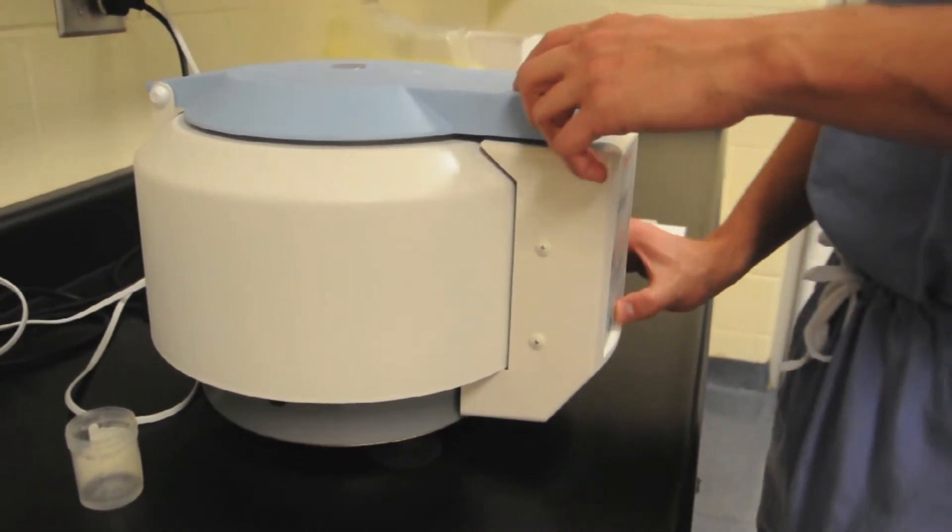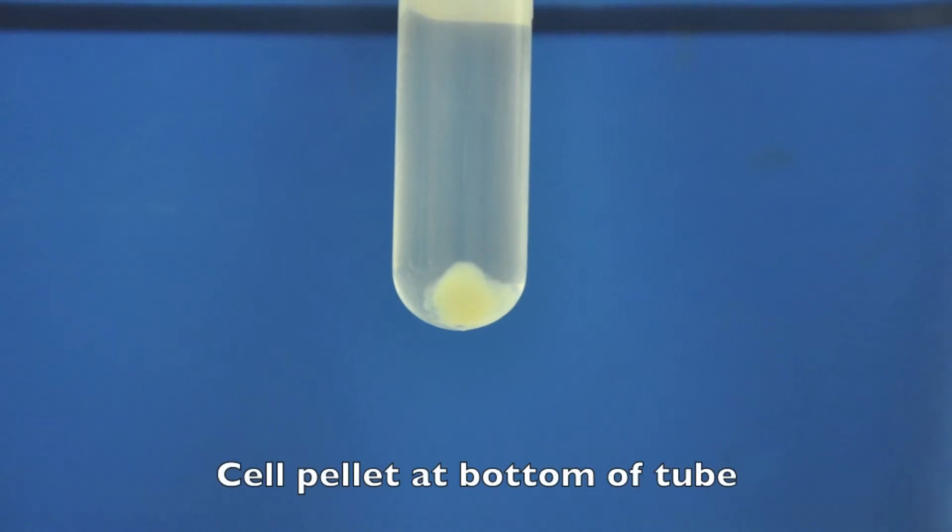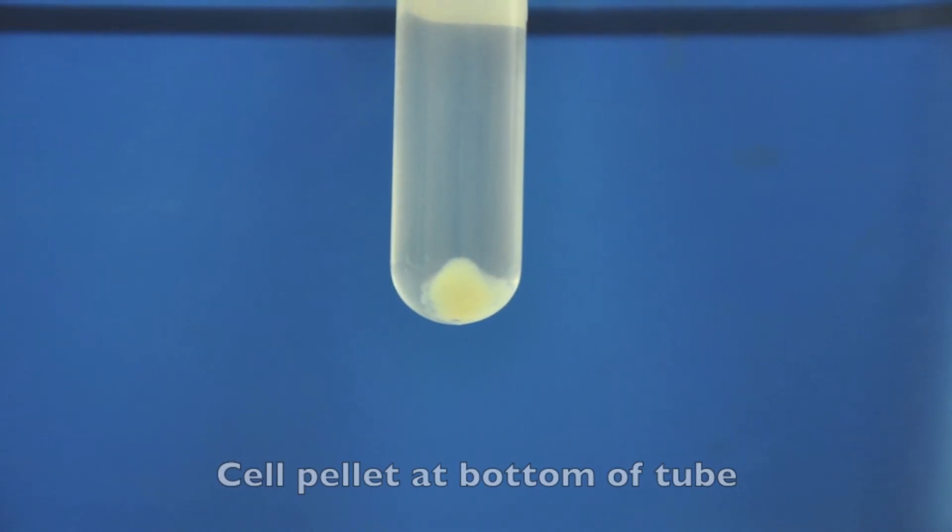Remove your tube from the centrifuge, and you should see a cell pellet similar to this one at the bottom of the tube. Pellets range in size depending on how cellular your sample is.